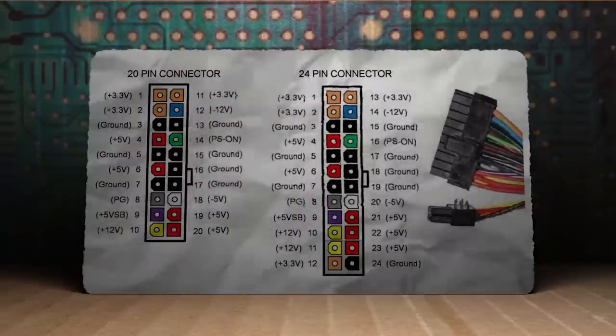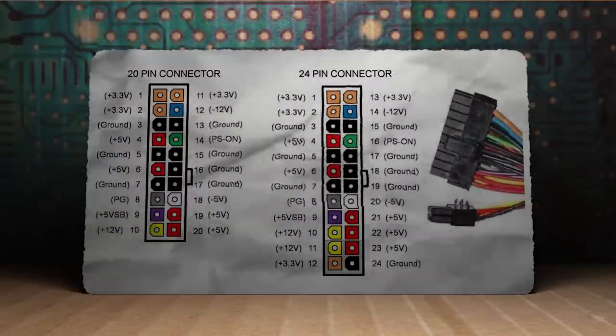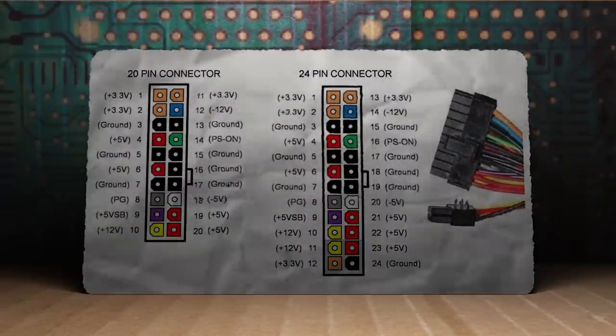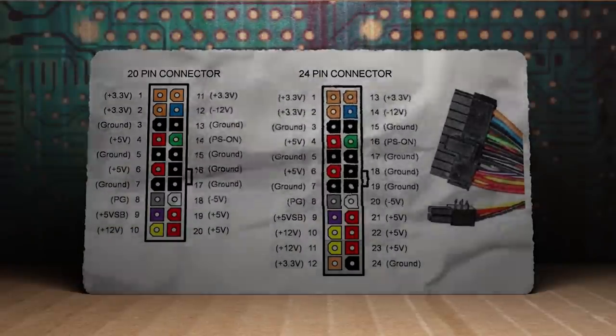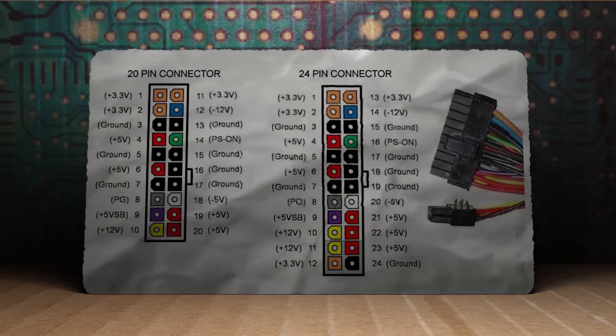So on a typical power supply, you have a mess of different colored wires. I won't go through all of them, but black is ground, red is 5 volts, orange is 3 volts, and green is power.